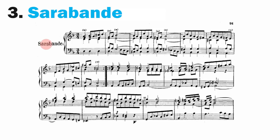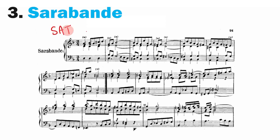The third movement, the sarabande, is the most emotional of the bunch and is actually very chorale-like in sound. There are four voices in this piece: soprano, alto, tenor, and bass — SATB — from highest to lowest. You can see the soprano line with stems going up, the alto line in the middle, the tenor line below that, and the bass line with stems going down. From a playing standpoint, chorale or counterpoint writing is a real challenge. The fingering is often unusual, there's a lot to think about, and you're suddenly juggling four different melodies at once, as opposed to simple melody and chord writing.